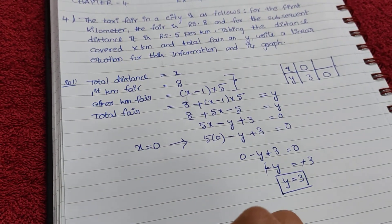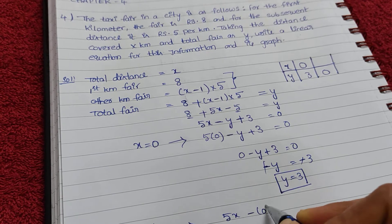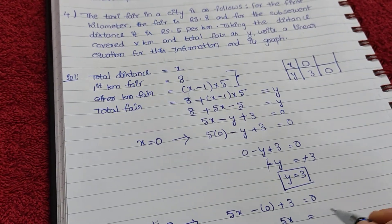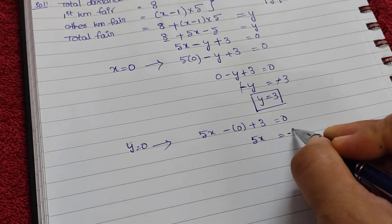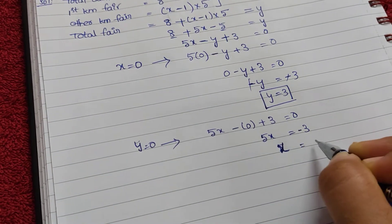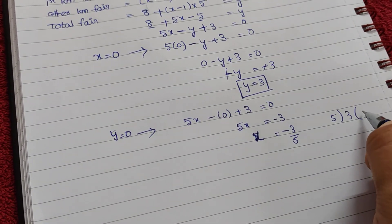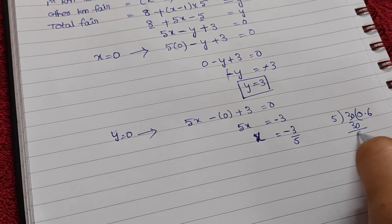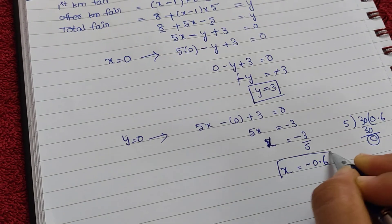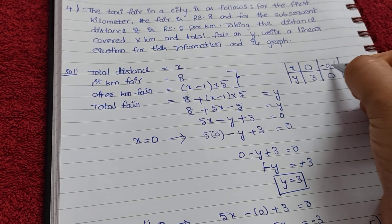Next, I'm taking y value as 0. If y value is 0, then 5x minus 0 plus 3 equals to 0. So 5x plus 3 equals 0. Taking 3 to the right side, 5x equals minus 3. Therefore x equals minus 3 by 5, which is minus 0.6.